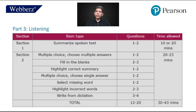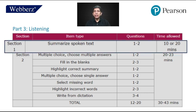Let's consider Part 3, that is listening. There are 2 sections in listening. The first section contains only summarized spoken text and has 1 to 2 questions. The total timing is 10 minutes per summarized spoken text, so it varies from 10 to 20 minutes.